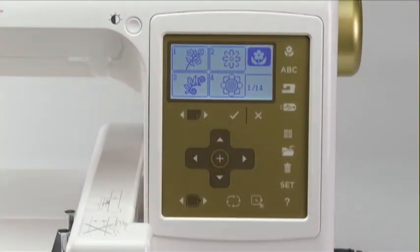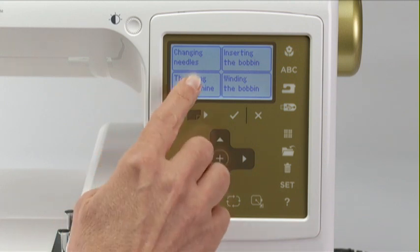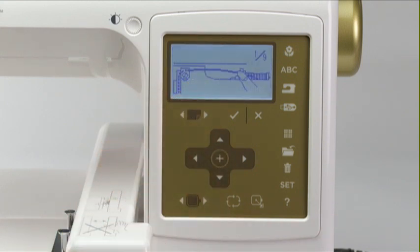Your machine has built-in quick reference tutorials. Press the help button and you can choose from four tutorials: changing needles, inserting the bobbin, threading the machine, and winding the bobbin. Select the tutorial you wish to view, then use the page forward and back buttons to scroll through the steps.